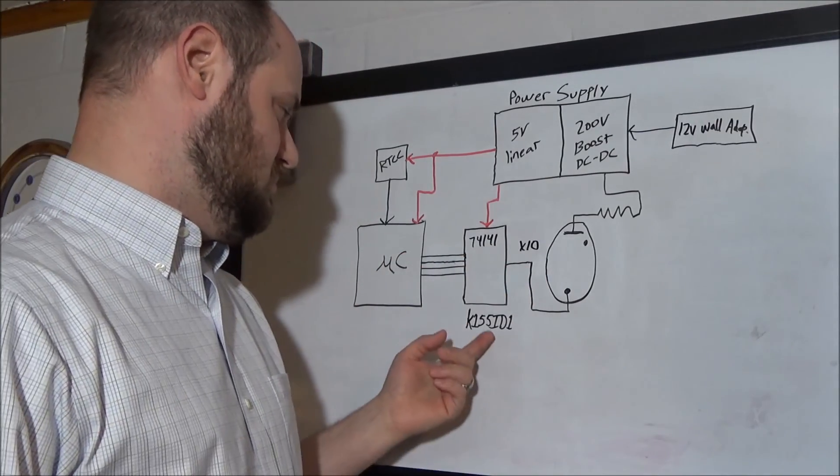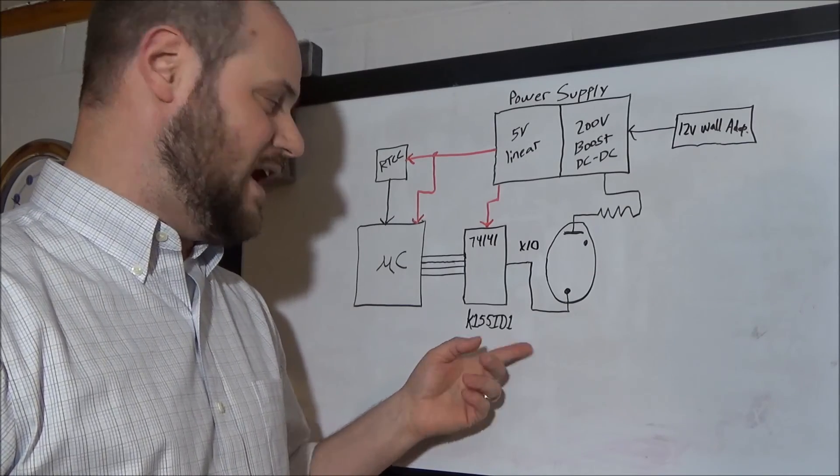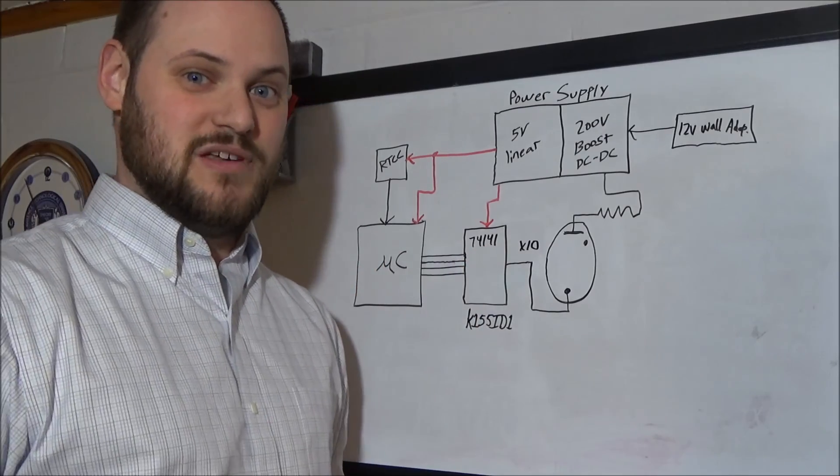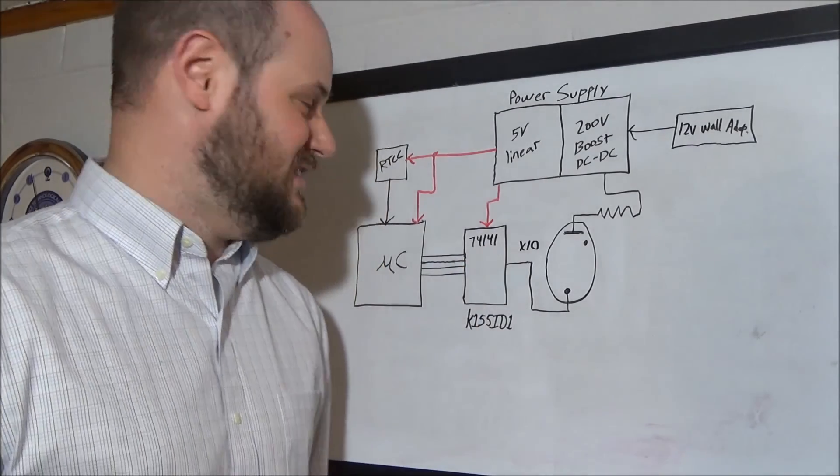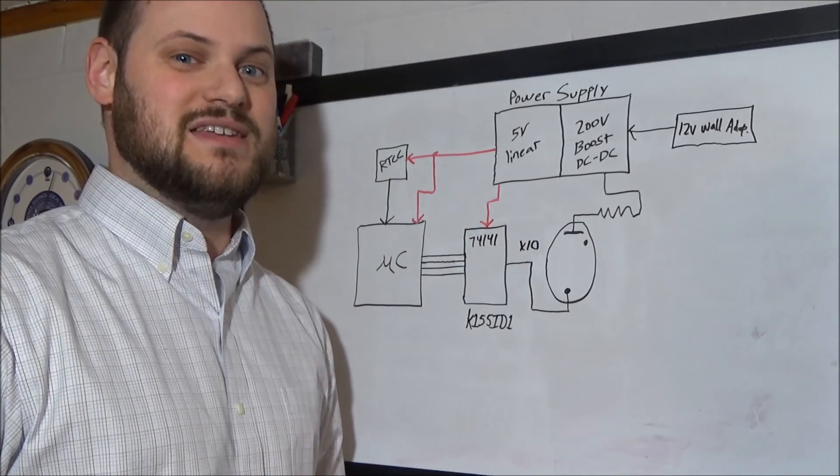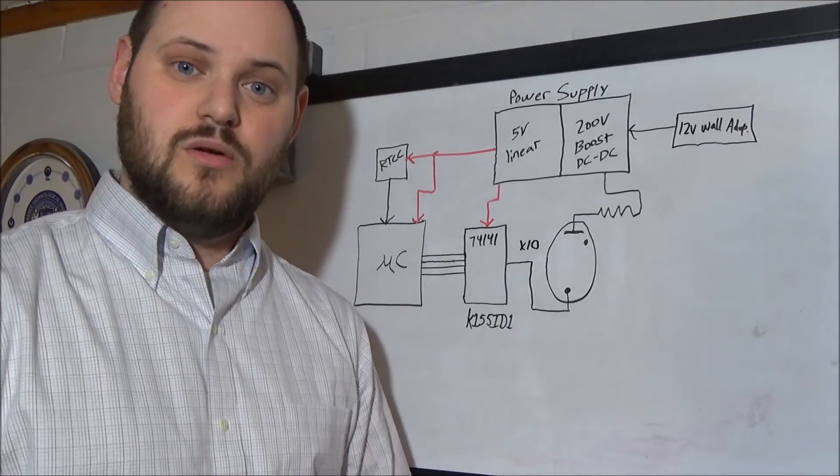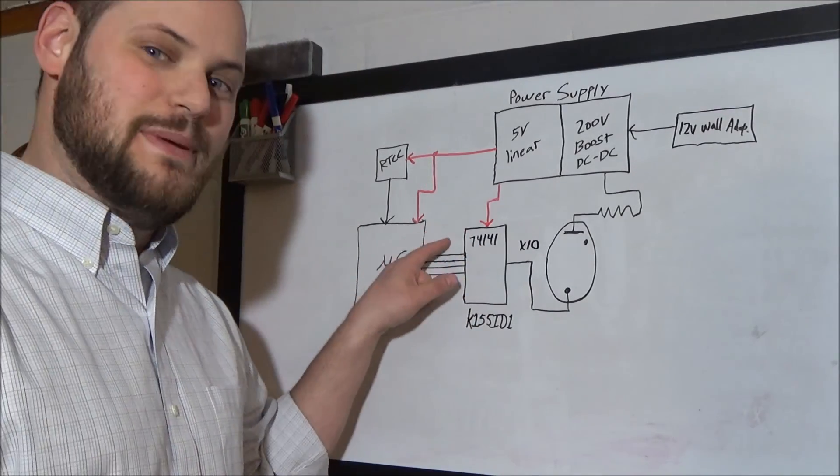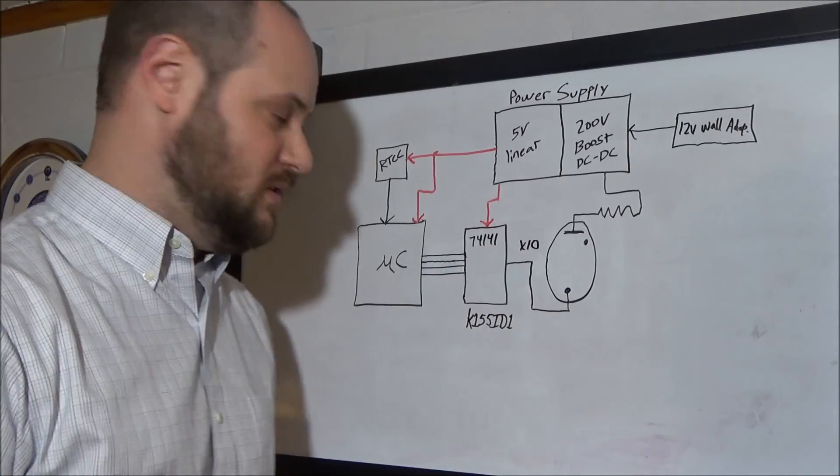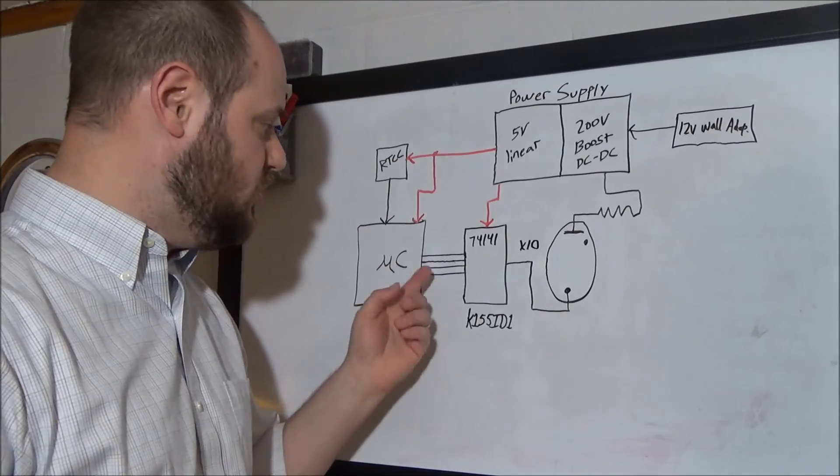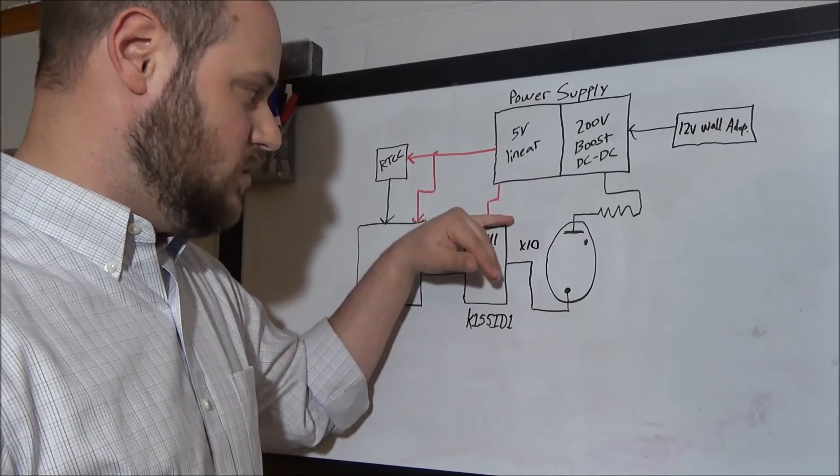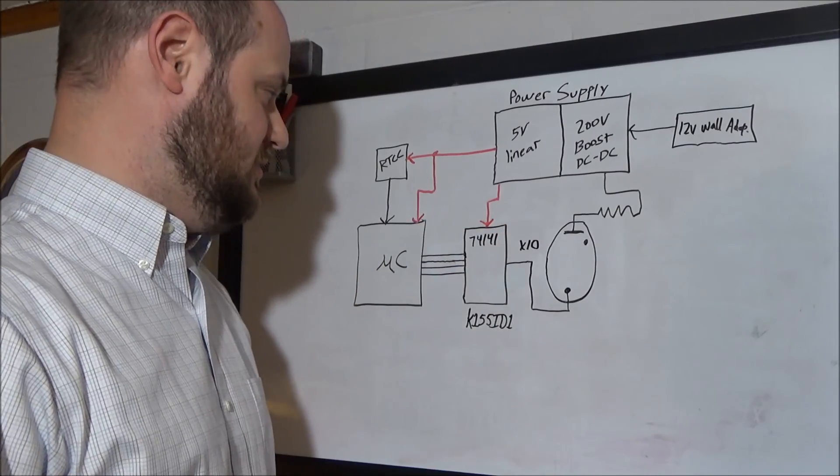You really don't want to be driving a Nixie Tube directly from a microcontroller. It might be able to handle the current, but when this thing is first firing on and hitting its threshold voltage, you could end up with surges of current, and you're probably going to blow the pins on your micro. You want some kind of buffer or driver in there anyway. So, we're using a K155ID1. It is a Russian Tube. The equivalent in the US is the 74141. And this particular chip is designed specifically for driving Nixie Tubes.